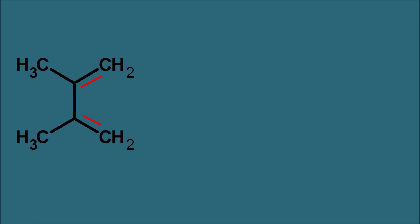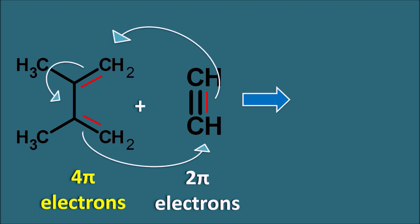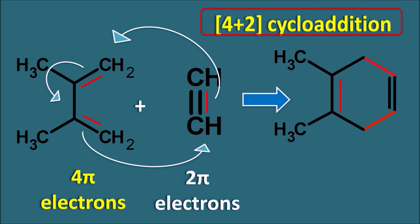In the diene there are two pi bonds, so four pi electrons are present. In the dienophile two pi bonds are present, but only one pi bond is involved in the reaction — contributing two pi electrons. The four pi electrons of the diene interact with the two pi electrons of the dienophile to form a cycloaddition product. The dienophile initially has two pi bonds but after cycloaddition retains only one, since only one pi bond is involved. Therefore this type of reaction is called a 4+2 cycloaddition. The Diels-Alder reaction is a 4+2 cycloaddition reaction.